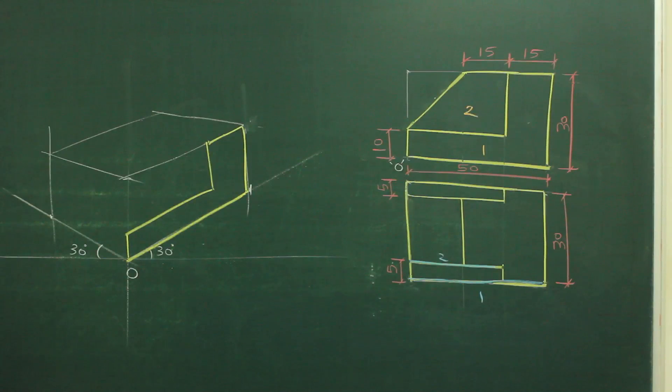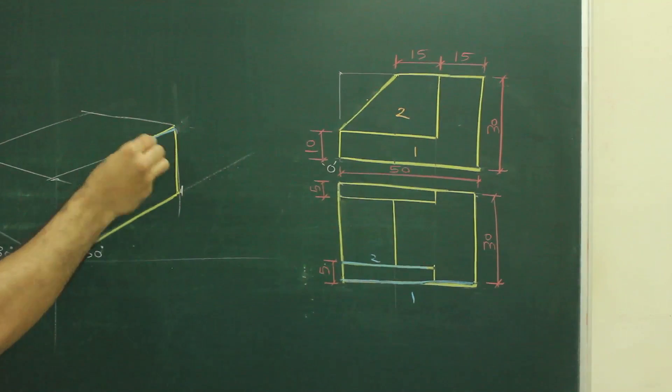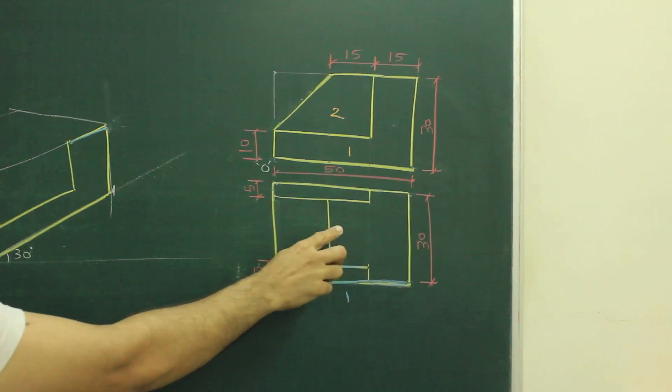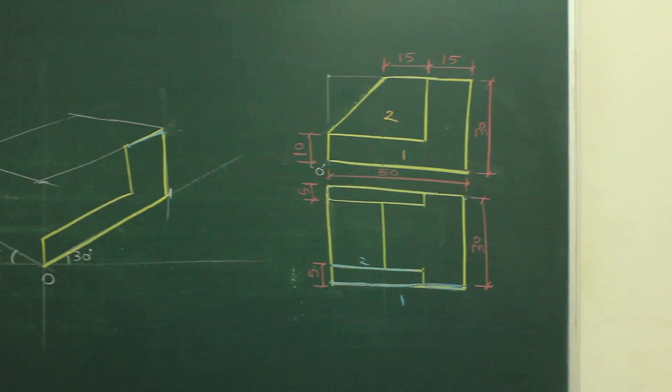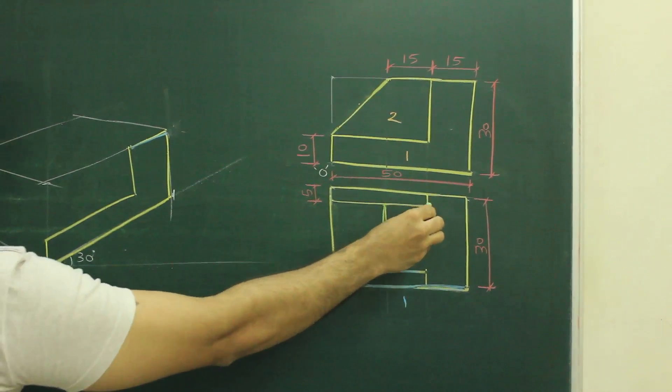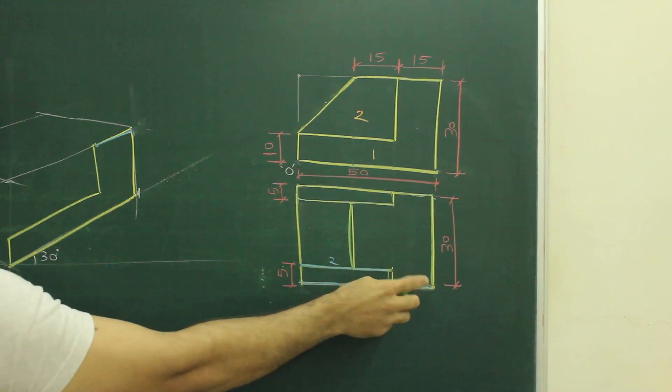Now if you see this first part, where is this in top view? This part is here. See in top view it is here. So that we can draw this T part also. So if you see clearly this T part is this. So I can draw this part.